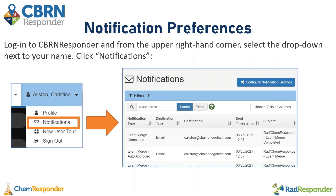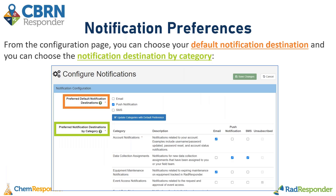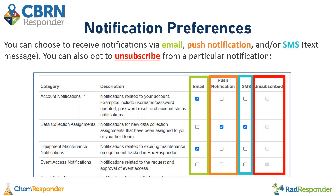Once you log into CBRN Responder, from the upper right-hand corner you can select the drop-down next to your name and then select Notifications. You'll see a list of all notifications sent to you and the destination type. At the top, you'll see a blue button that says Configure Notification Settings. Once you click that, you'll be brought to the configuration page, which allows you to choose your default notification destination and also choose notification destinations by category. You can choose to receive notifications via email, push notifications, and/or text message, and you can also opt to unsubscribe for a particular notification.